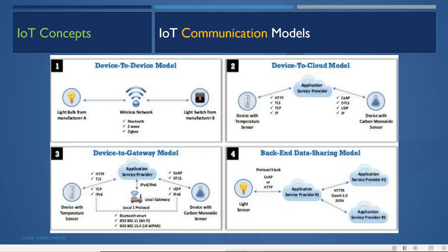IoT communication models include the device-to-device model, where a light bulb from manufacturer A communicates directly with a light switch from manufacturer B through a wireless network using Bluetooth, Z-Wave, or Zigbee, enabling sensing of when to enable or disable the light.